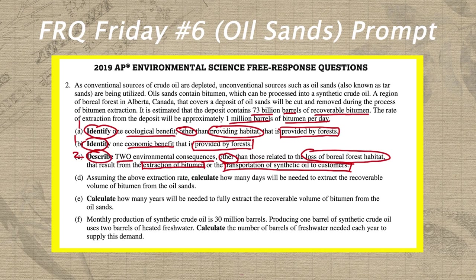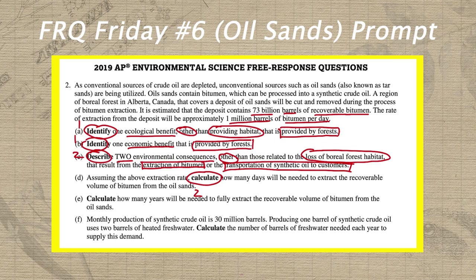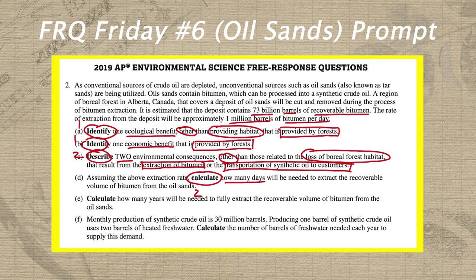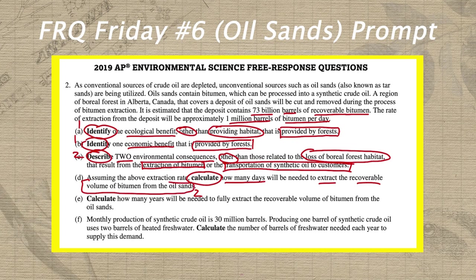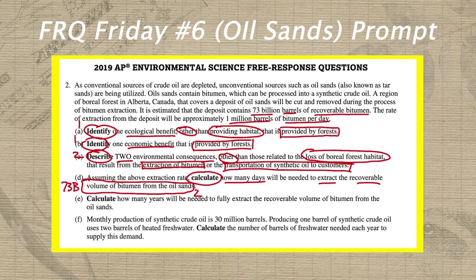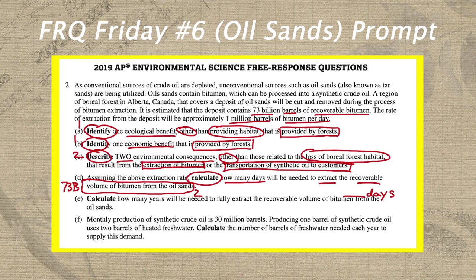In letter D, we see our first calculate prompt of the FRQ Friday series. Circle the task verb and write a two next to it, because calculate prompts are worth two points — one for the correct setup with units, one for the correct answer with units. What we're actually calculating is how many days will be needed to extract the recoverable volume of bitumen from the oil sands — that recoverable volume is 73 billion barrels. Because our answer needs to be in days, I'll write 'blank days' underneath this prompt to remind myself that days are the required units.